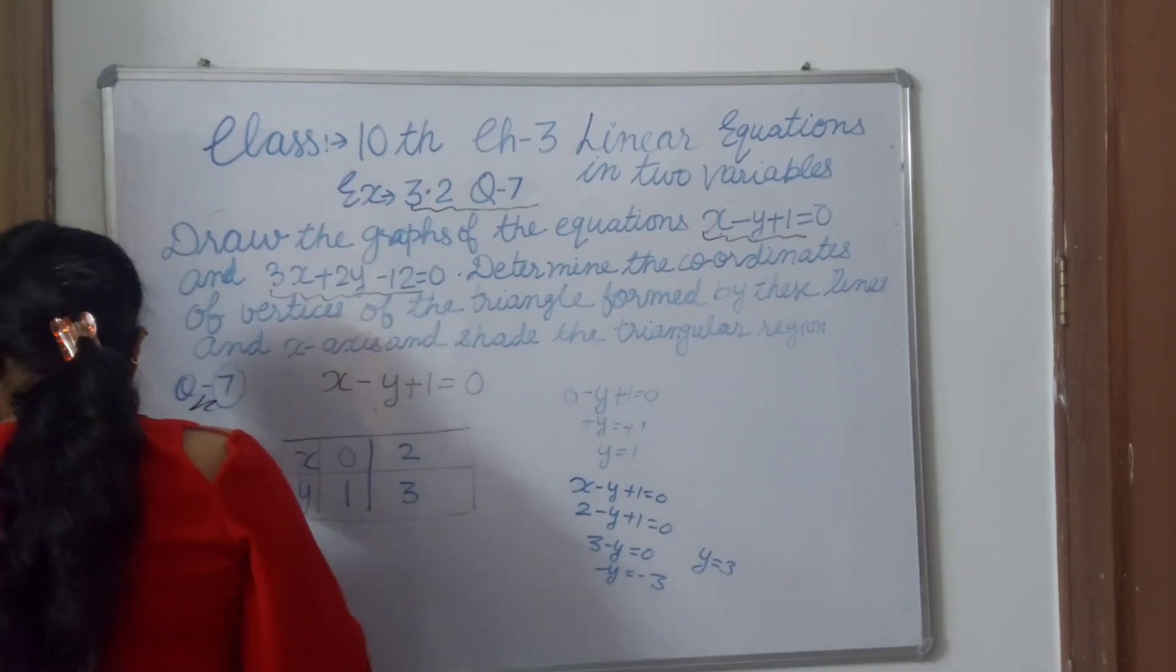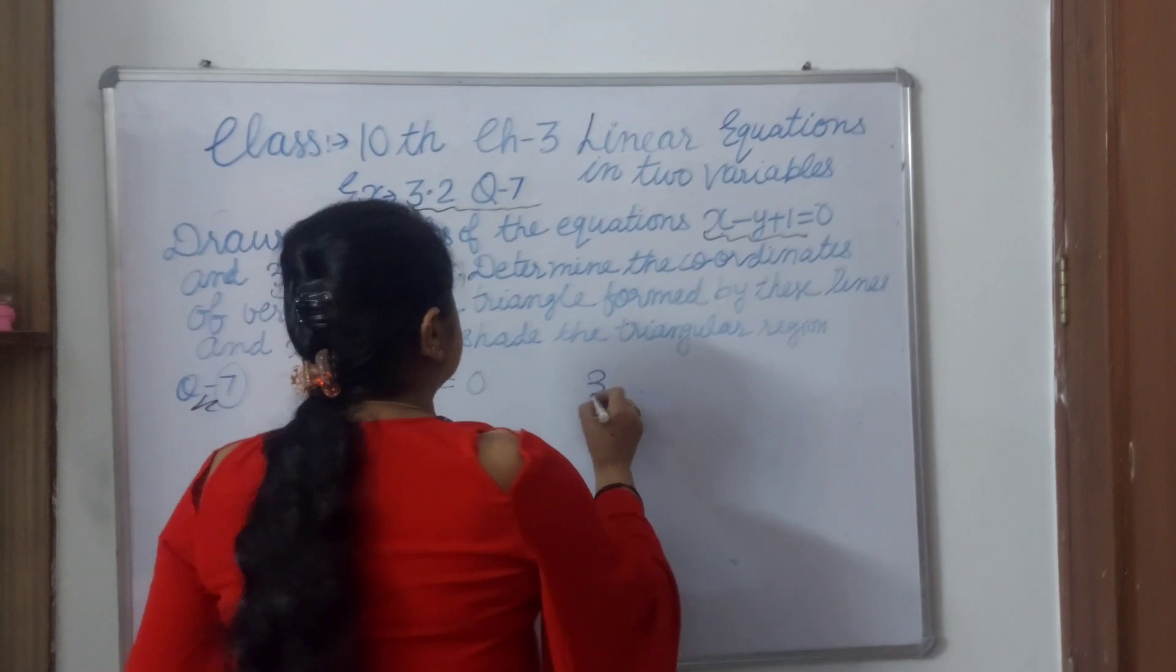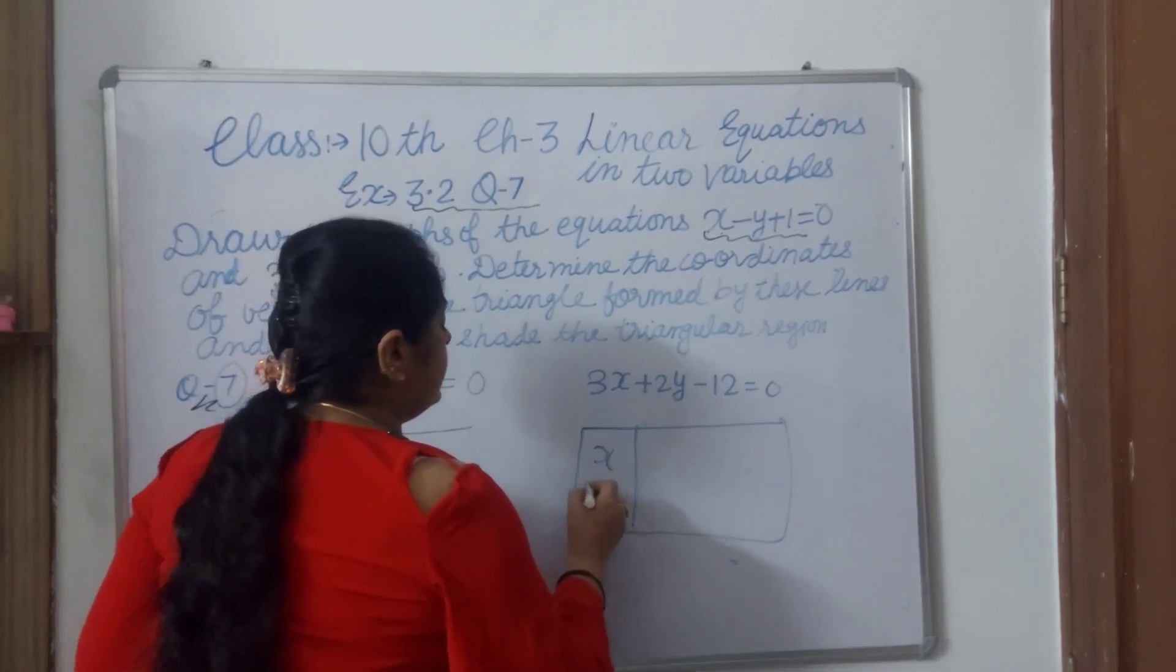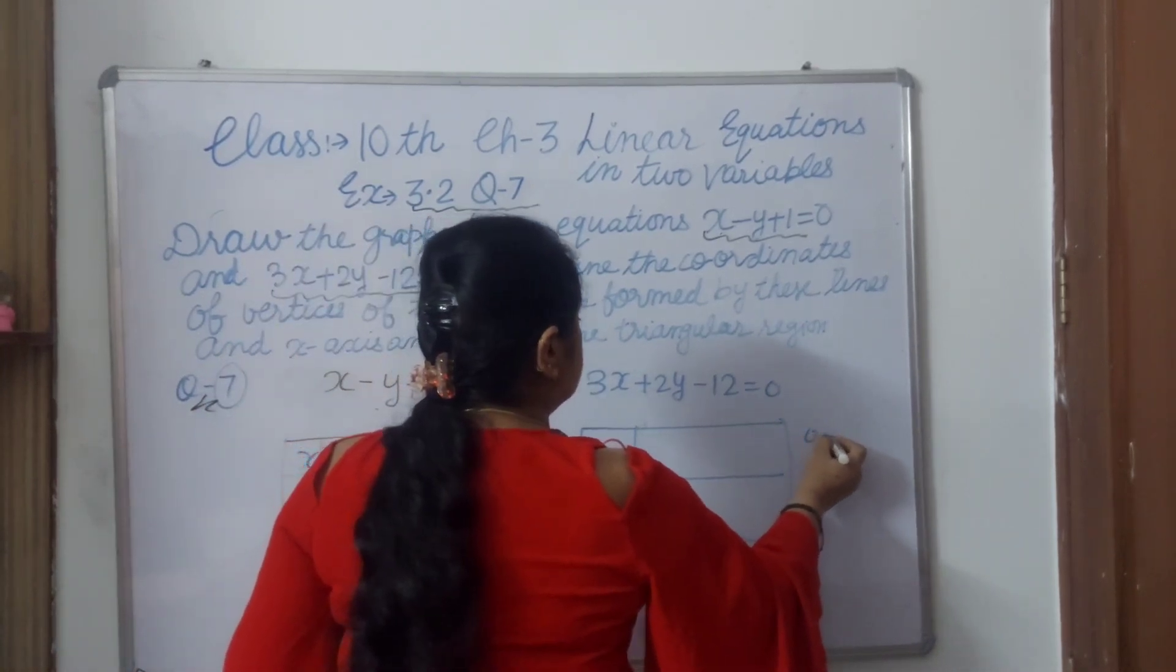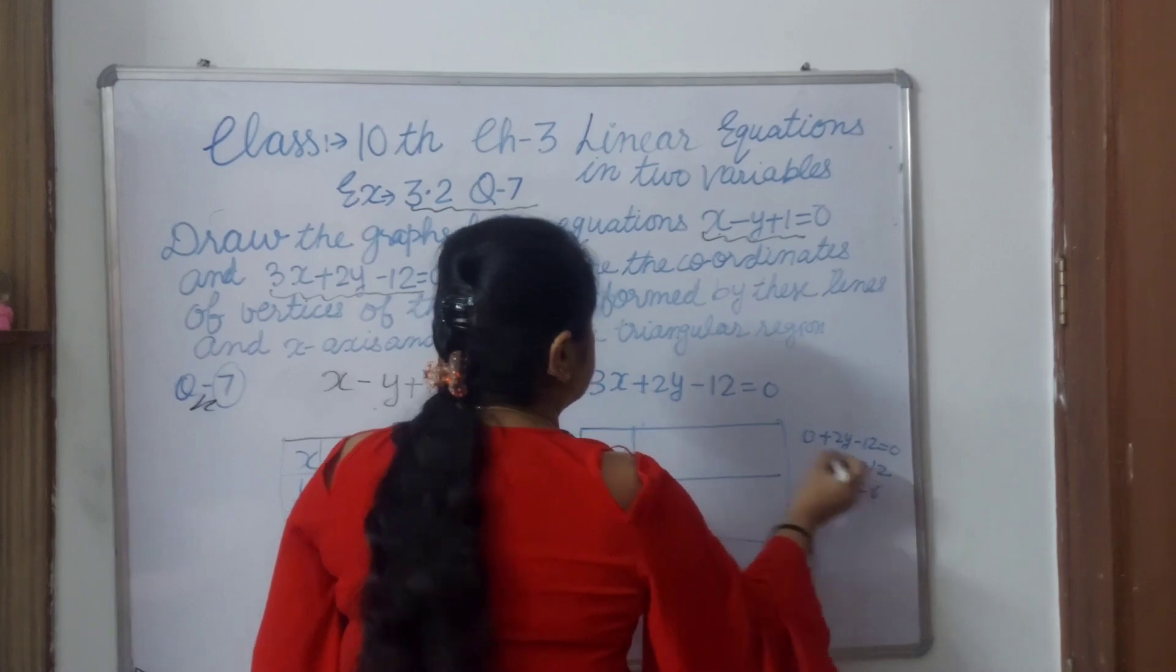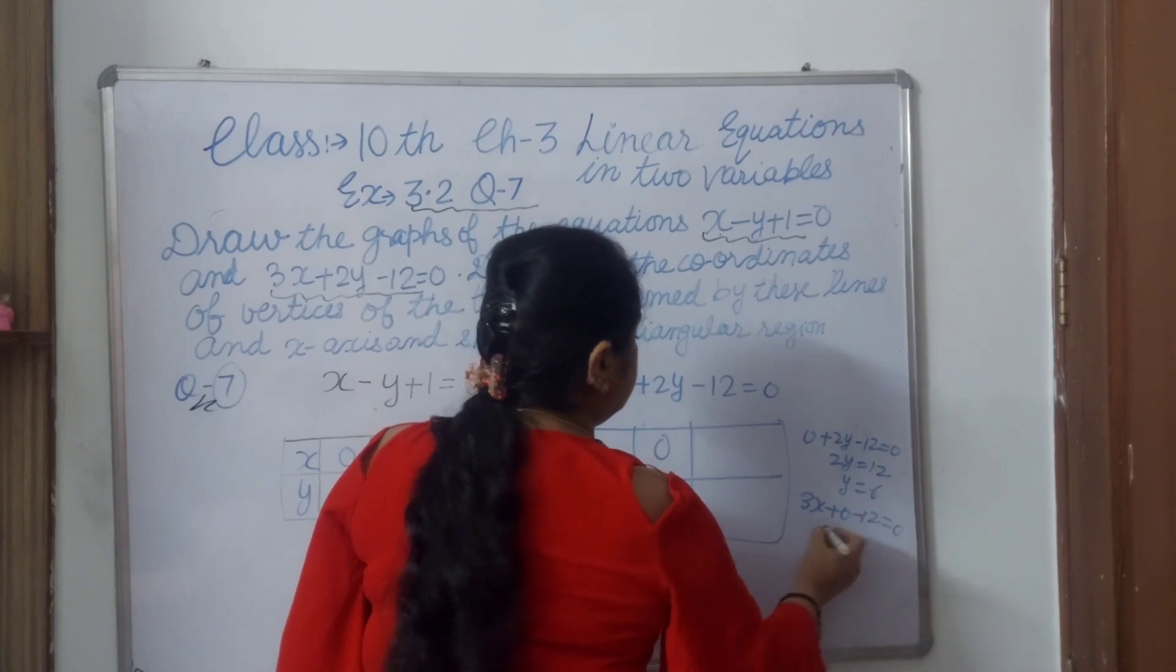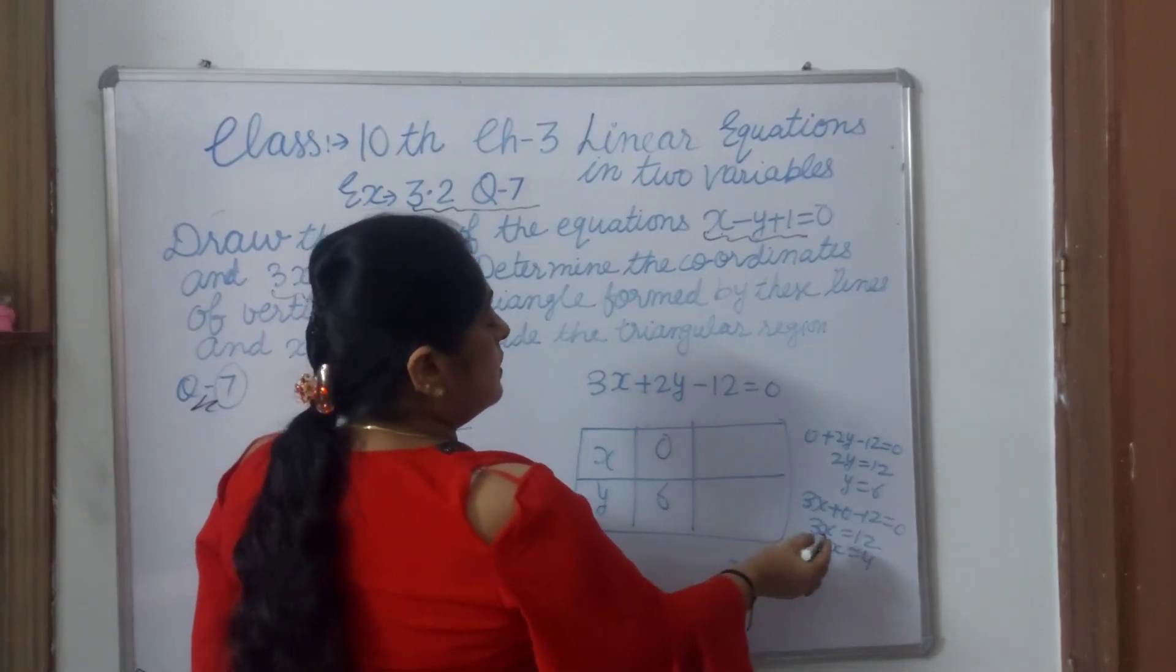Now second table for our second equation: 3x plus 2y minus 12 equals 0. We make the table, two values of x and y we will take. Take first x equals 0. If I am taking x equals 0, 0 plus 2y minus 12 equals 0. 2y equals 12, and y equals 6. I have taken x as 0 and y value is 6. Now one time you take y is 0. 3x plus 0 minus 12 equals 0. 3x equals 12, and x value is 4.